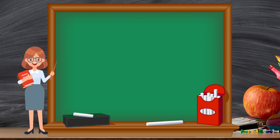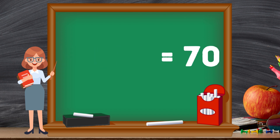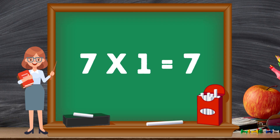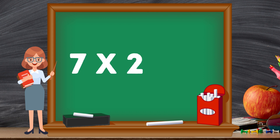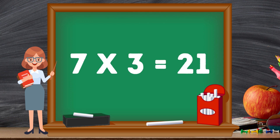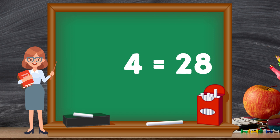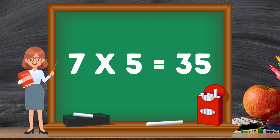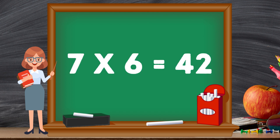7 tens are 70. 7 twos are 14. 7 twos are 14. 7 threes are 21. 7 threes are 21. 7 fours are 28. 7 fours are 28. 7 fives are 35. 7 fives are 35. 7 sixes are 42.